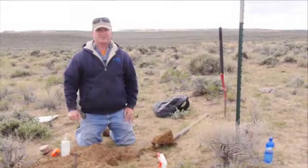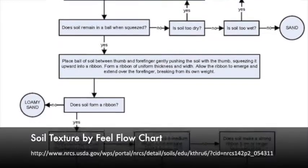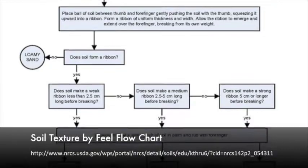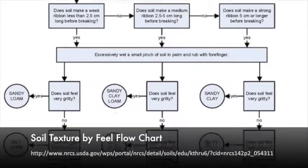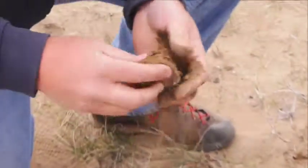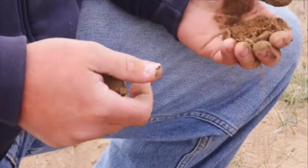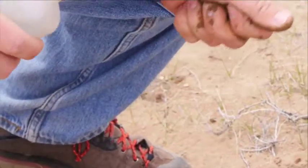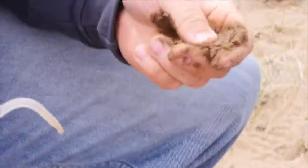I can definitely see two different layers for us to sample here for our soil site correlation. There's a soil texture by feel flow chart available on the NRCS website — you can just look that one up online, and it's a pretty handy tool. We're going to take maybe a couple grams of soil and feel for grittiness. We can stop right now and say that this is a sandy soil.